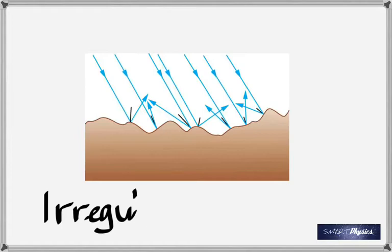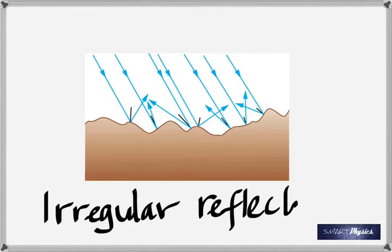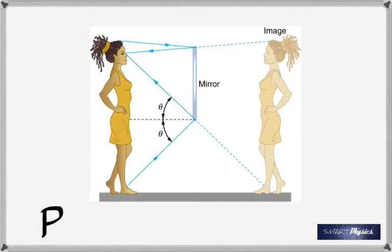But if the surface was perfectly smooth and perfectly plain, then depending on where you stand, you will see an image. This also shows you how to get an image. From this diagram, the person does not require a mirror as tall as themselves to see their full image.